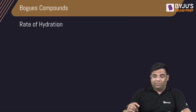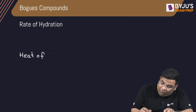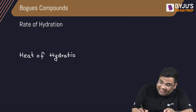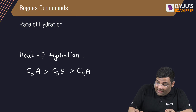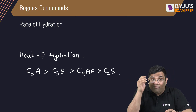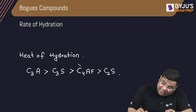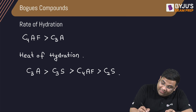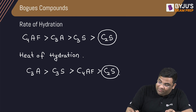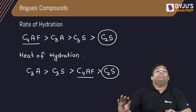Rate of hydration is different from heat of hydration — rate means how fast it is reacting, while heat of hydration means how much heat is released. For rate of hydration in descending order: C4AF has the highest rate of hydration, followed by C3A, then C3S, and finally C2S. Note that C2S has both the lowest rate and lowest heat of hydration, but C4AF shifts to the top for rate.